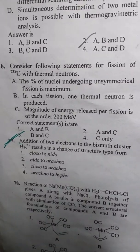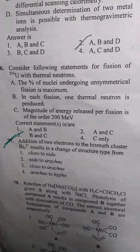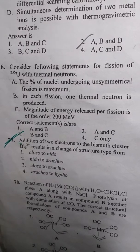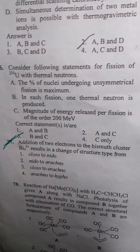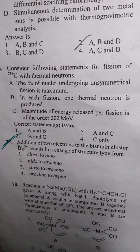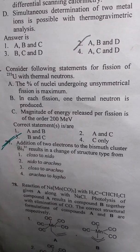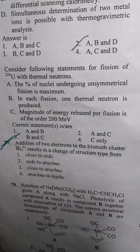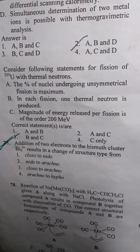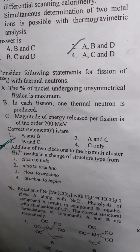Coming to this question, it says consider the following statements for fission of U-235 with thermal neutrons. The statements are: the percentage of nuclei undergoing unsymmetrical fission is maximum, in each fission one thermal neutron is produced, and magnitude of energy released per fission is of the order of 200 MeV.